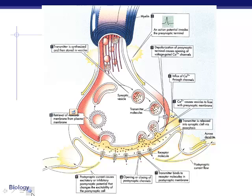Here's a visual step-by-step recap: the action potential arrives and stimulates calcium channels to open; calcium rushes in and binds to synaptic vesicles carrying the neurotransmitter; the vesicles fuse and release neurotransmitters via exocytosis; the neurotransmitters diffuse across the gap and bind to receptor molecules, which stimulates the action potential to begin again in the next neuron. That's basically how neurons talk to each other.